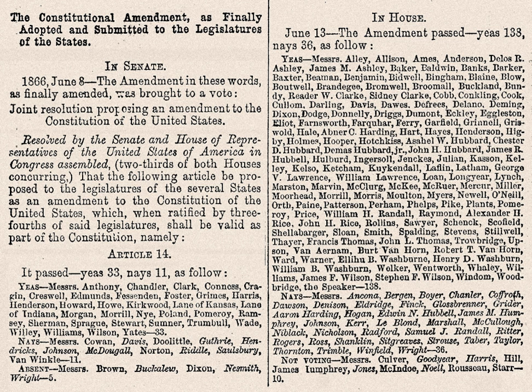On June 16, 1866, Secretary of State William Seward transmitted the Fourteenth Amendment to the governors of the several states for its ratification. State legislatures in every formerly Confederate state, with the exception of Tennessee, refused to ratify it. This refusal led to the passage of the Reconstruction Acts. Ignoring the existing state governments, military government was imposed until new civil governments were established and the Fourteenth Amendment was ratified. Congress also passed a law on March 2, 1867, requiring that a former Confederate state must ratify the Fourteenth Amendment before that state could be declared entitled to representation in Congress.